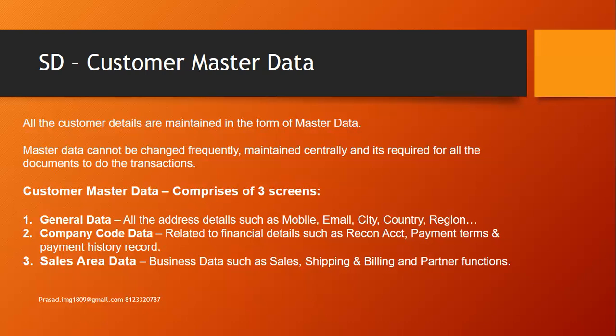Customer master data in SAP SD module comprises three major screens. First is general data, where we capture all address details such as mobile, email, city, country, and region. Second is company code data, where we capture all financial details such as reconciliation account, payment terms, and payment history record. Third is sales area data, where we capture all business data such as sales, shipping, billing, and partner functions and partner determination procedure details.